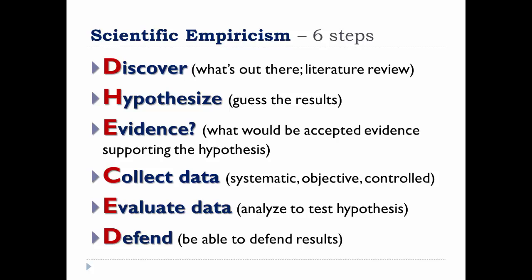Here's a shorthand version of the six steps. You'll discover what is out there by conducting a literature review. Hypothesize or guess what the results would be. Evidence is about what would be accepted as supporting the hypothesis. Collect data in a systematic, objective, and controlled manner. Evaluate that data by analyzing it to test the hypothesis. And finally, defend your results.